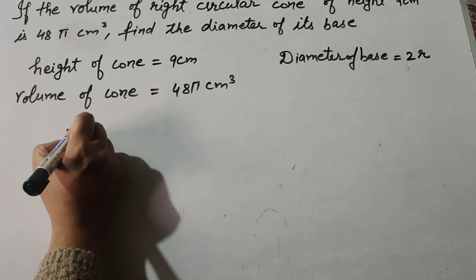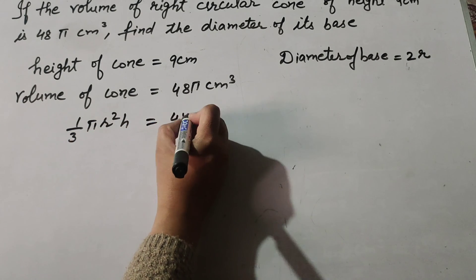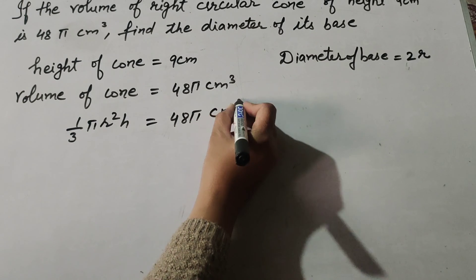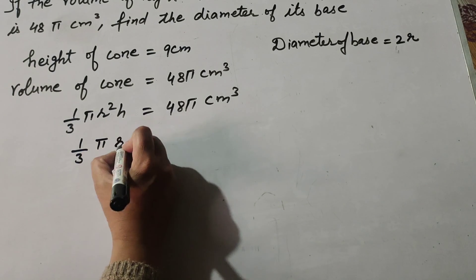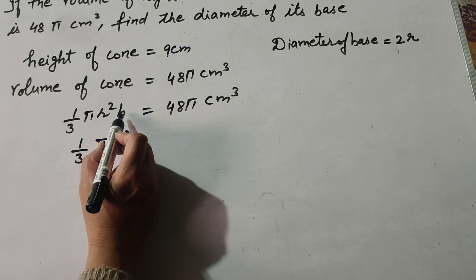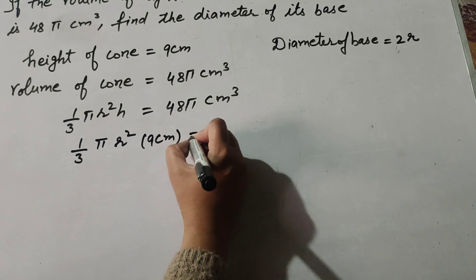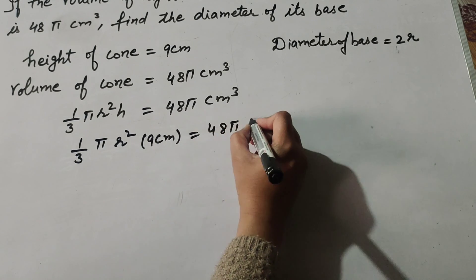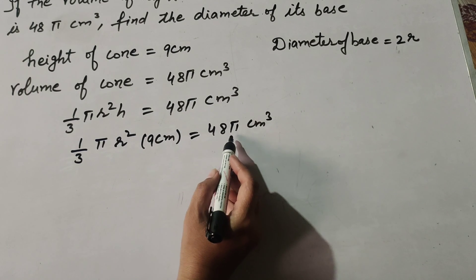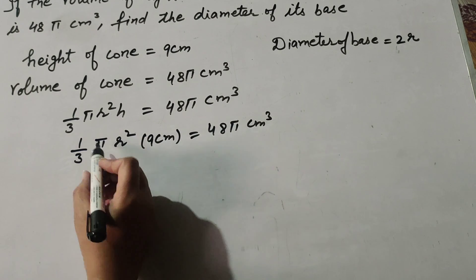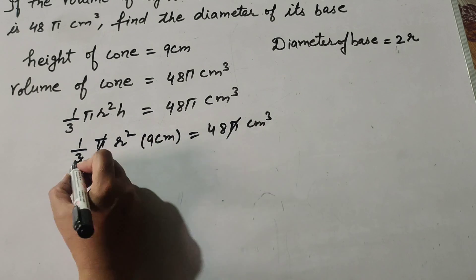We know the formula to find the volume of a cone: it is (1/3)πr²h = 48π centimeter cube. So we substitute: (1/3) × π × r² × 9 = 48π. We do not substitute the value of π because π appears on both sides and they cancel out.